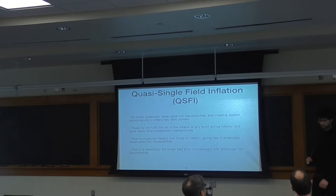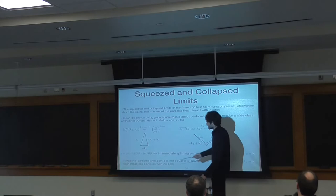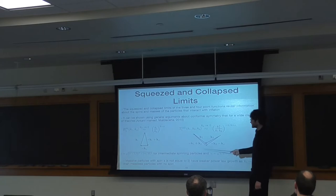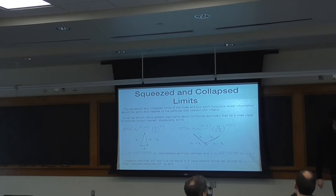Everything so far has been pretty general for a wide class of theories. What about spin dependence? If you have higher spin, alpha becomes larger and the power-law growth weakens. I'm interested in the largest enhancements, so I'll focus on the spin-zero case. In principle, you could have an infinite tower of massive higher spins with a coherent effect, but I won't focus on that. The theory we will mostly be concerned with is a branch known as quasi-single field inflation. The idea is to get larger non-Gaussianities by adding extra massive scalars to the inflationary field content.